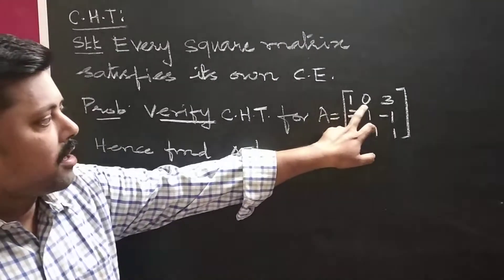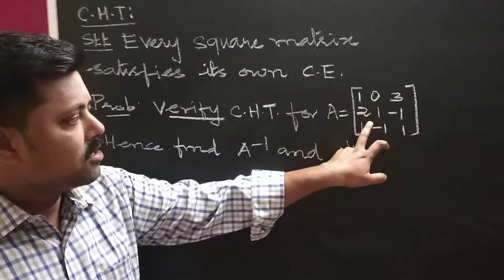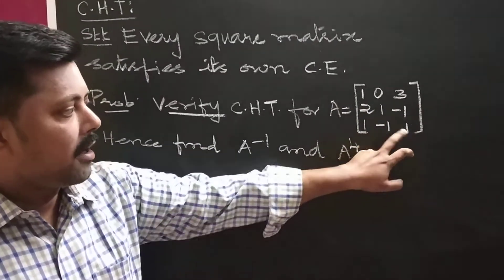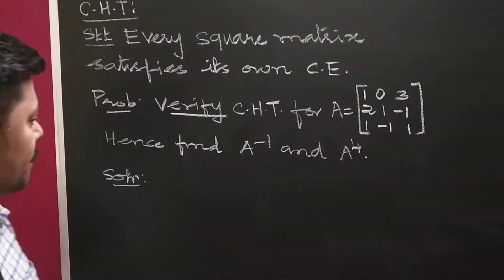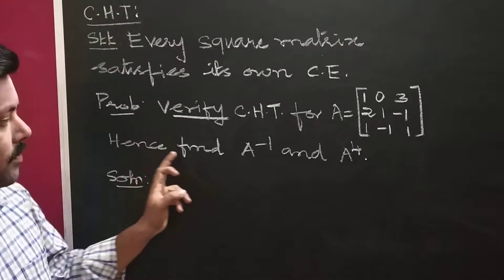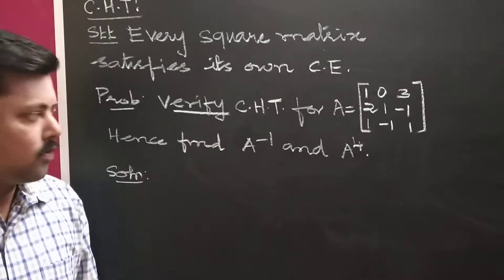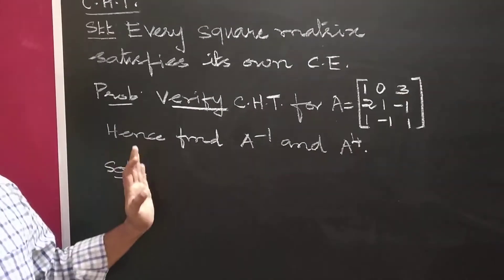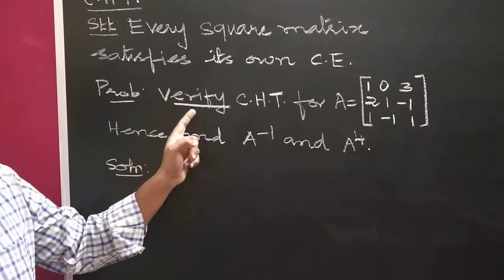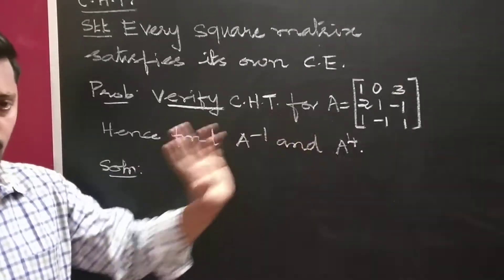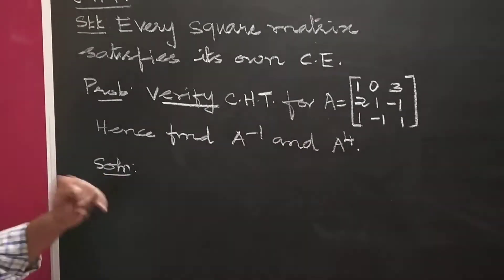A equals the matrix: 1, 0, 3; 2, 1, minus 1; 1, minus 1, 1. Hence, find A inverse and A power 4. So we have to verify CHT and then find A inverse and A power 4 using CHT.